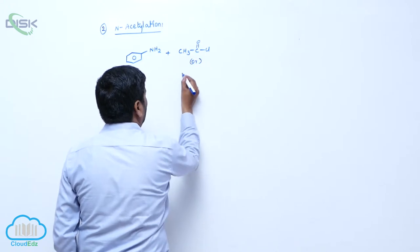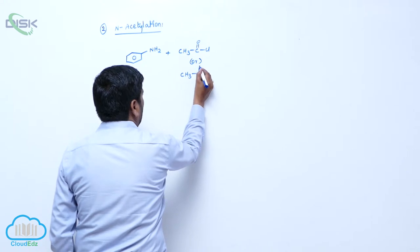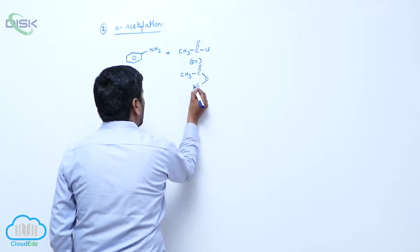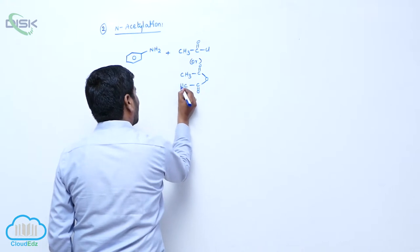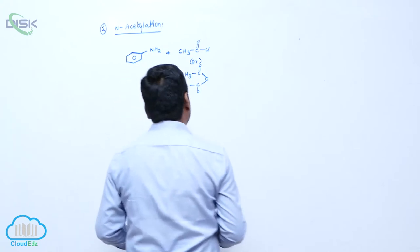With acetyl chloride, CH3-C double bond O, C double bond O-CH3. This one is acetyl chloride, below one is which one?